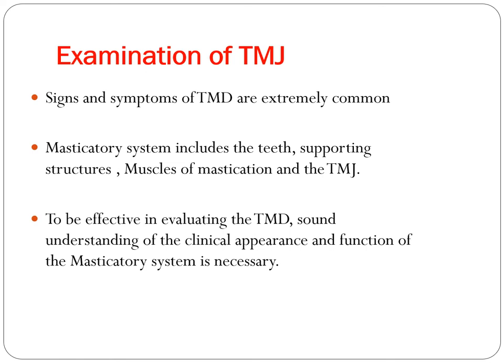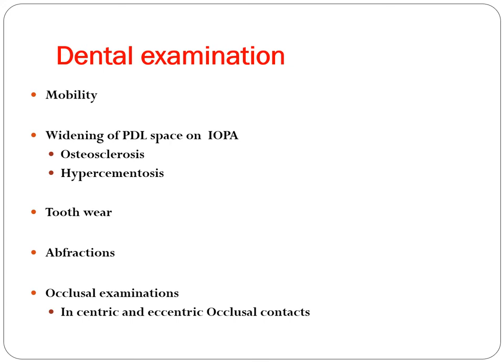The examination of the masticatory system includes the teeth, supporting structures, muscles of mastication, and the TMJ. A thorough evaluation is necessary, including an understanding of the clinical appearance and function of the muscles. Check the TMJ movements to rule out what type of pain the patient has.